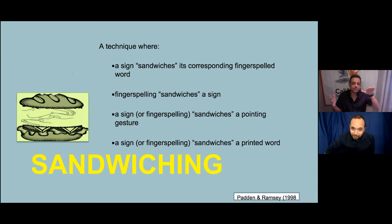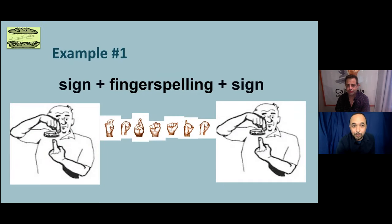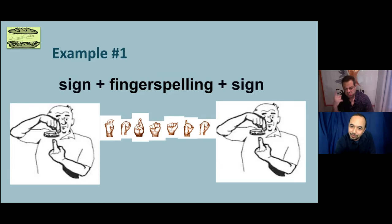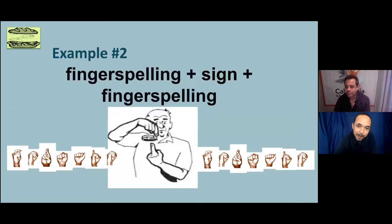Now let us talk about sandwiching. You would fingerspell, show a sign and fingerspell — or sign, fingerspell the English vocabulary, then show the sign again. This is a technique for introducing English vocabulary. For example: the sign TORNADO, then the fingerspelling T-O-R-N-A-D-O, then the sign TORNADO again. And then the reverse: give the fingerspelling, then the sign, then the fingerspelling again.